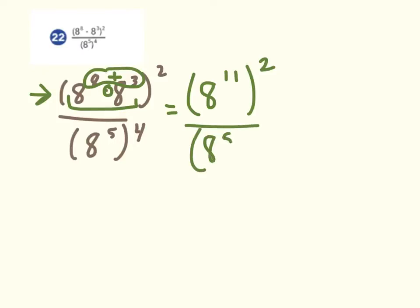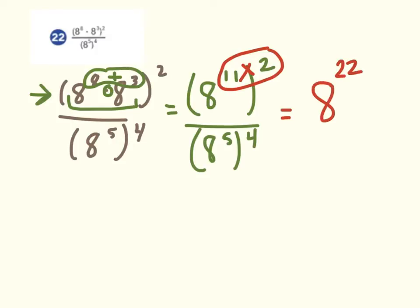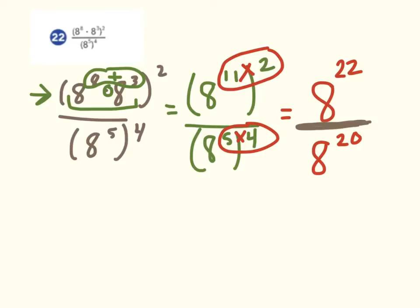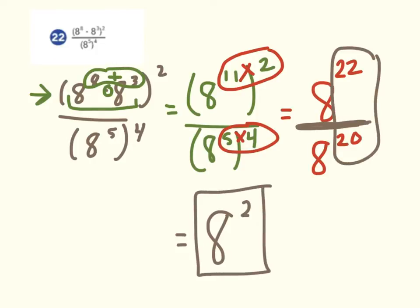I'm just going to bring over the bottom. Now I see we have the power rule — keep the base and multiply the exponents — that gives us 8 to the 22nd power. The same thing is going on in the denominator: keep the base and multiply the exponents. Now we have a division problem, so we use the quotient rule. The quotient rule says when the bases are the same and we're dividing, keep the base and subtract the exponents, so our final answer is 8 to the 2nd power.